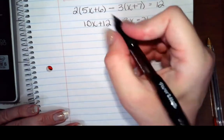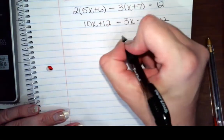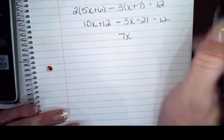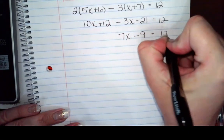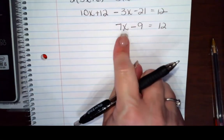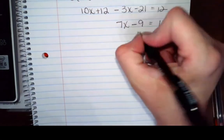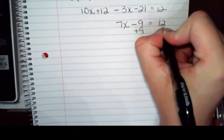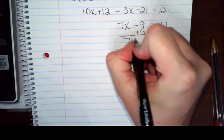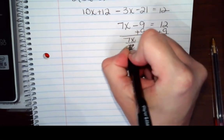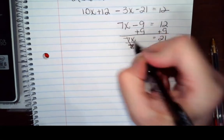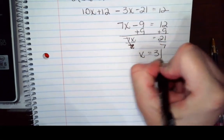I'm going to combine like terms on the left. 10x minus 3x is 7x. 12 minus 21 is negative 9. And now my x's are already isolated, so I'm going to go ahead and get rid of that 9. So I have 7x is 21. Don't divide by x. And so x equals 3.